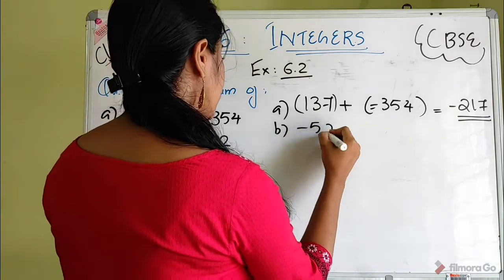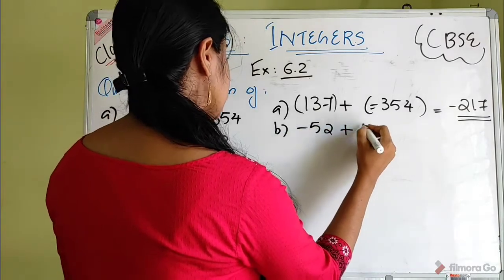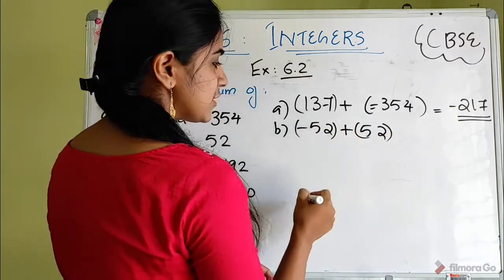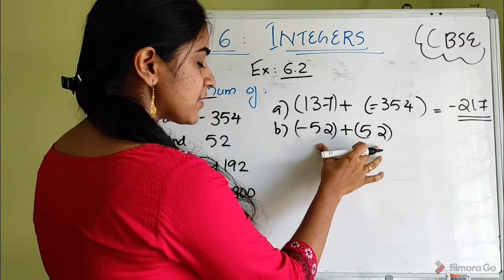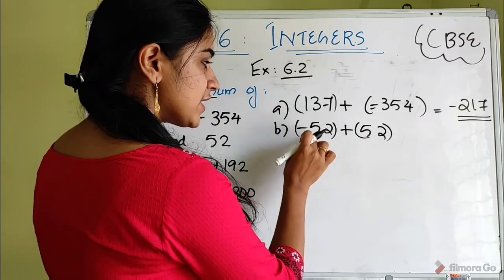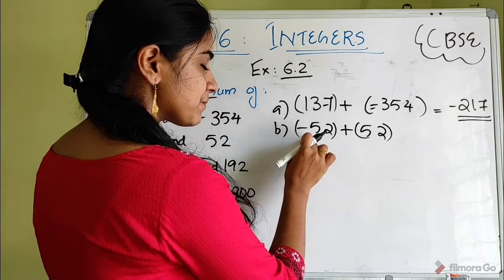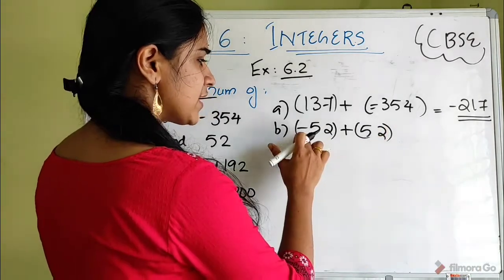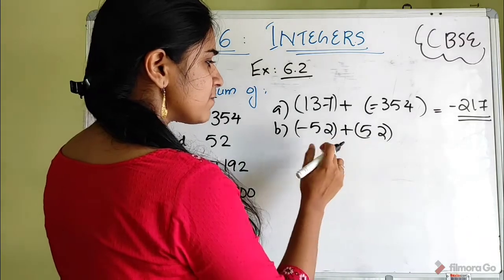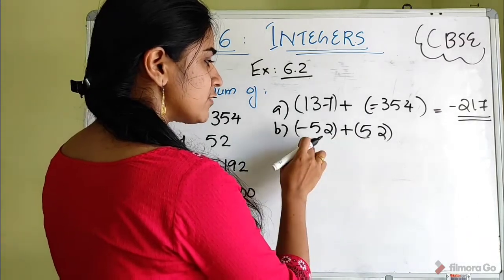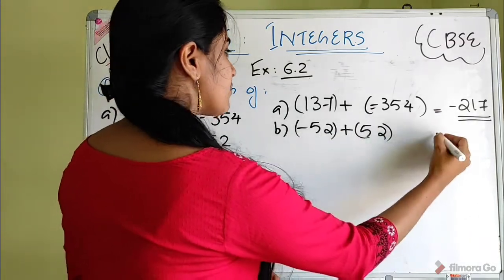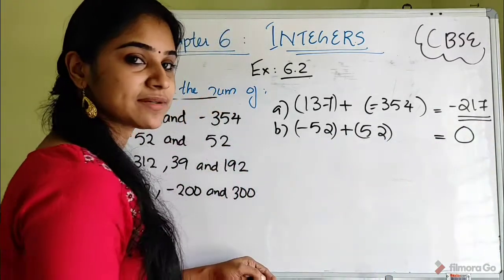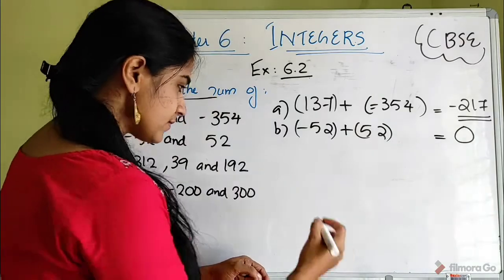Question B: minus 52 plus 52. These are the same number with different signs. When you have different signs and the same value, the answer is 0. The difference sign with bigger count being negative gives zero.